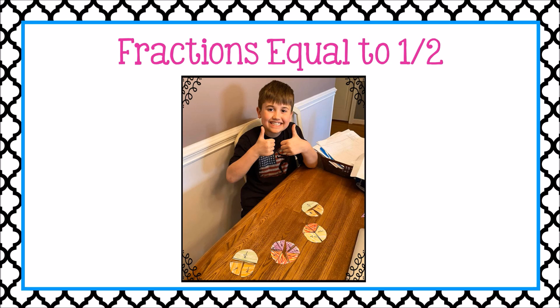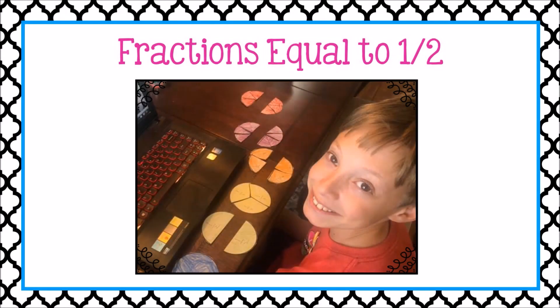Here are some other ways that a friend found fractions equal or equivalent to one half. Now our friend Caden pointed out something really important — he said he could find lots of ways using the circle models to find fractions equivalent to one half, but the one way he could not do was using the thirds. Because he is right: thirds cannot represent one half. One third is just too small and two thirds are just too big.